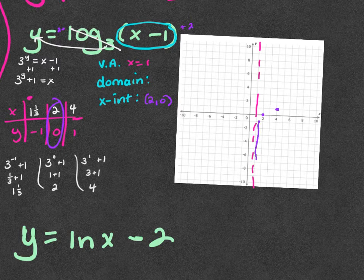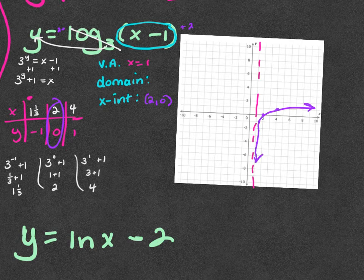The curve is rough but you know what it's supposed to look like. The domain here is 1 to positive infinity.